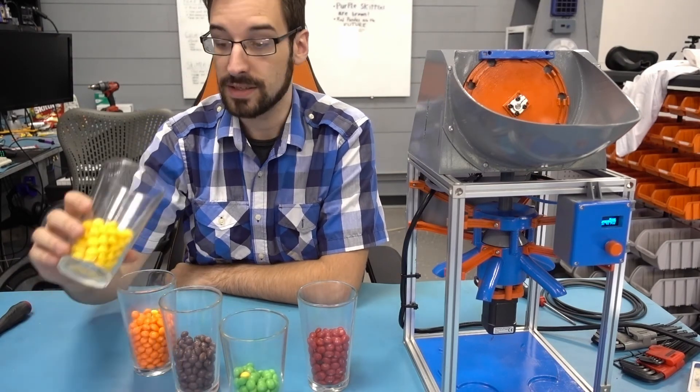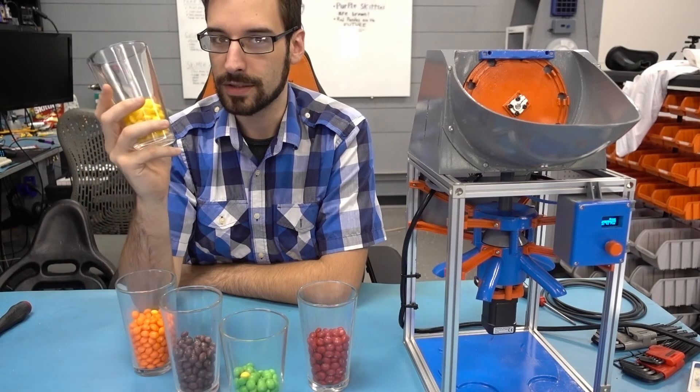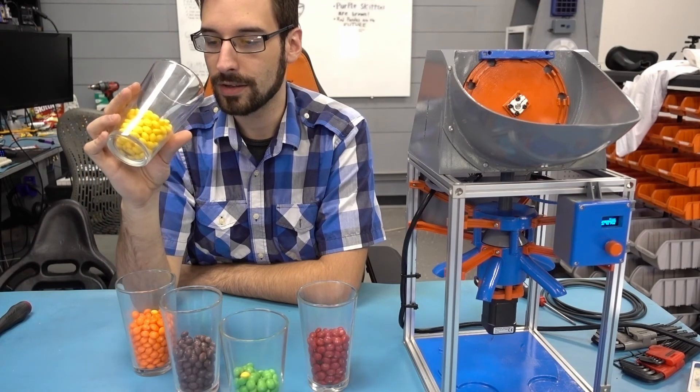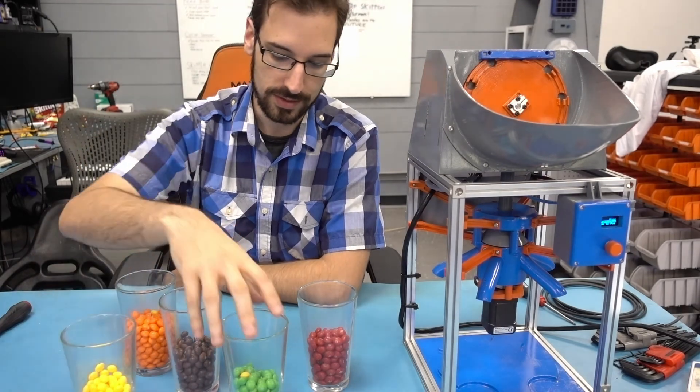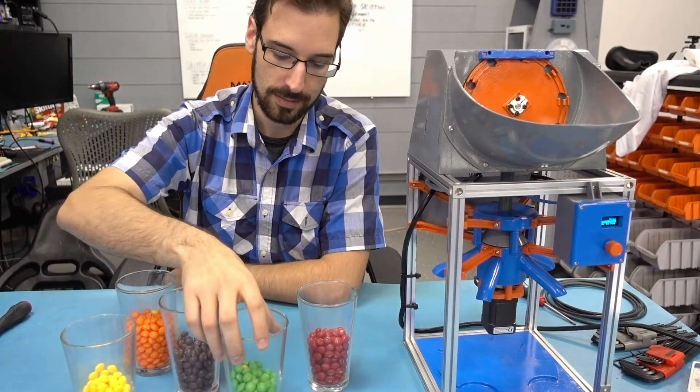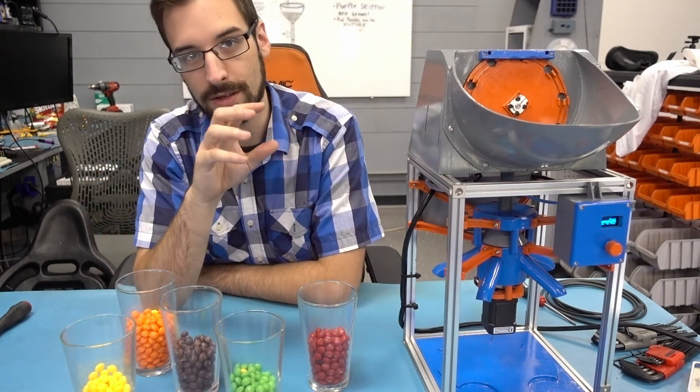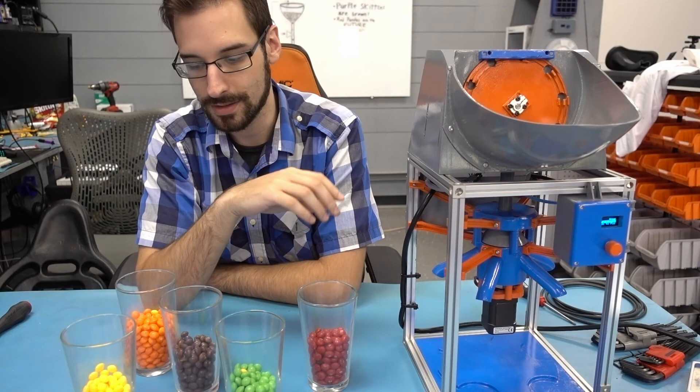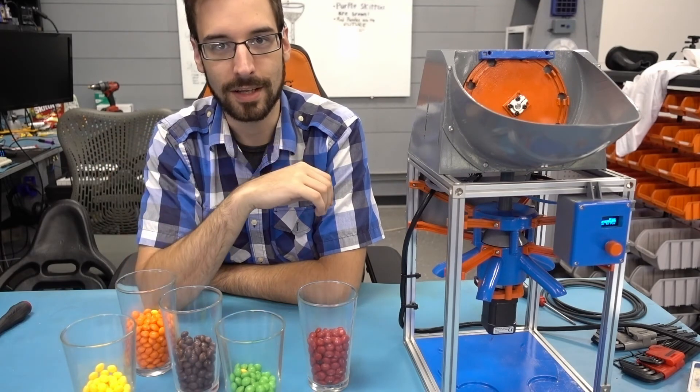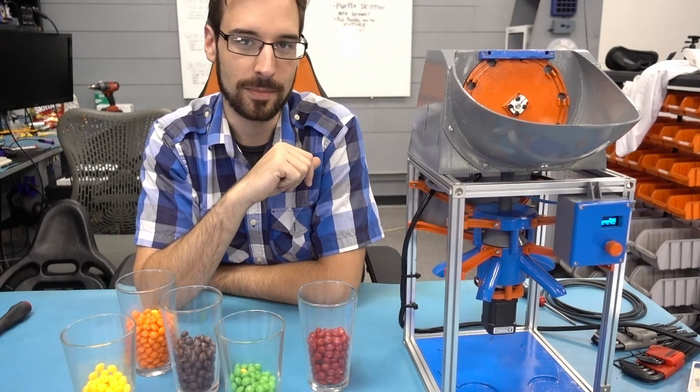Interesting side note: it appears, at least in this bag of Skittles, the yellow ones are just a bit bigger than the rest, and the green ones are just a bit smaller than the rest. Because green ones almost never cause the clogging issues, and it's usually a yellow one when things do get clogged up.